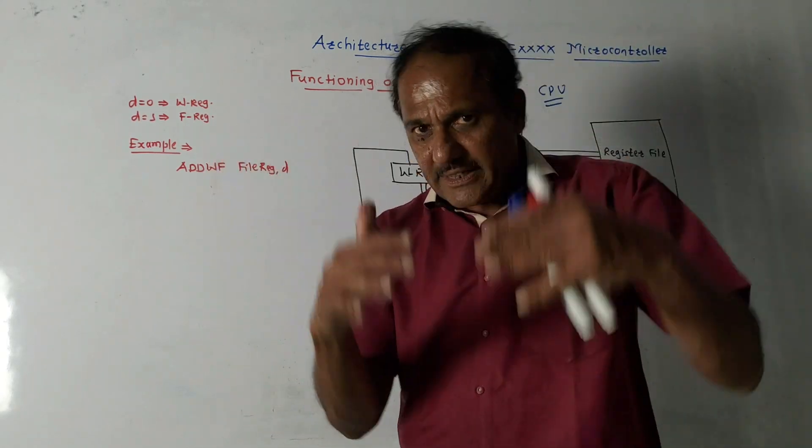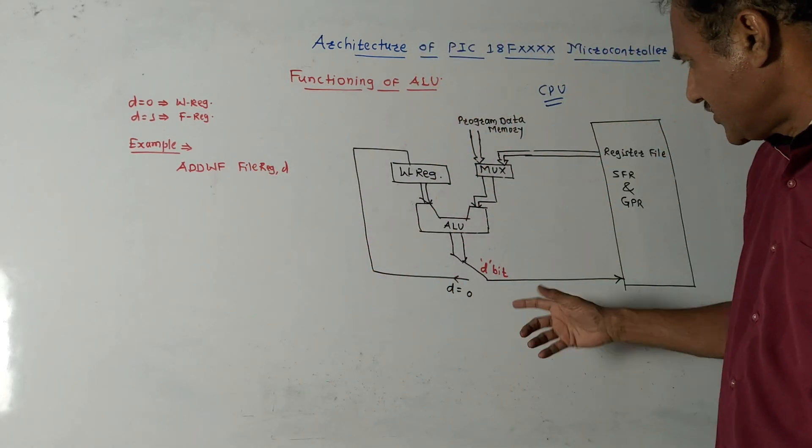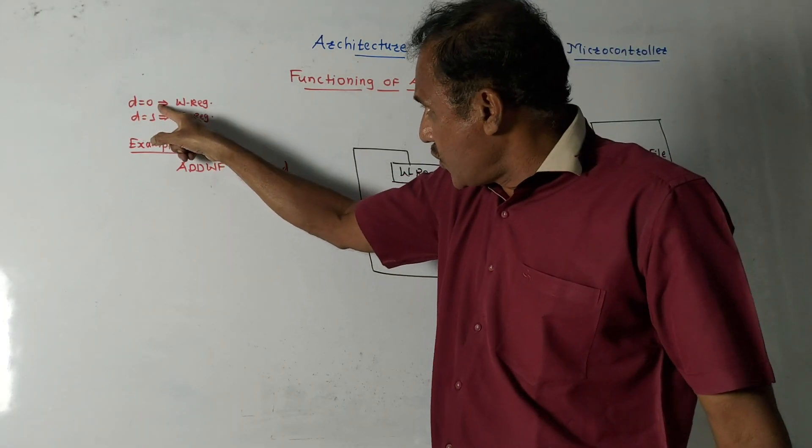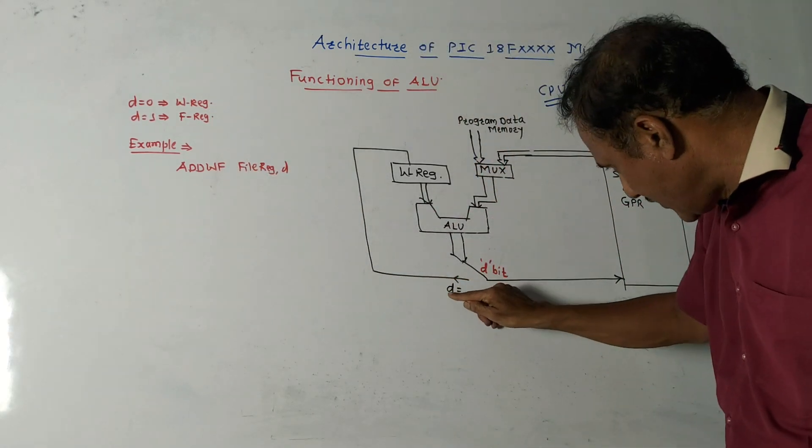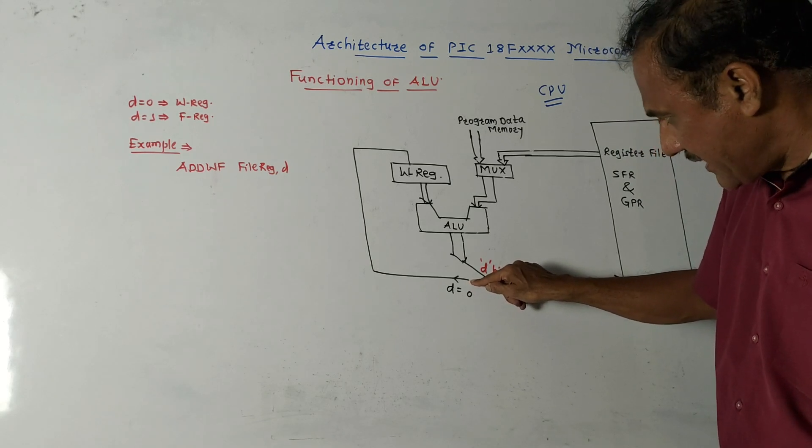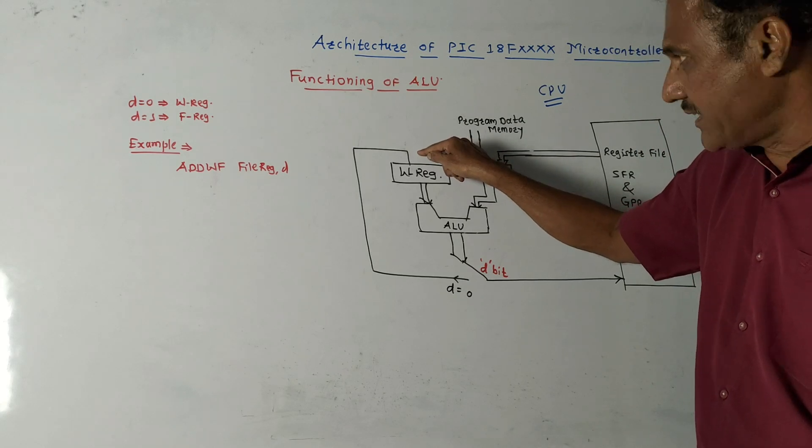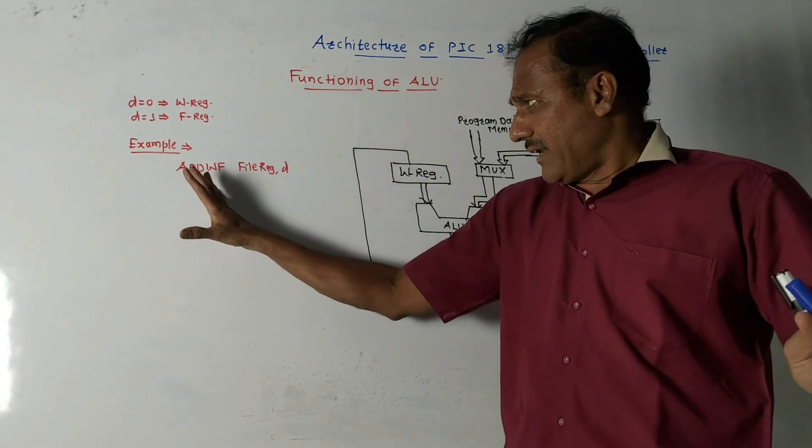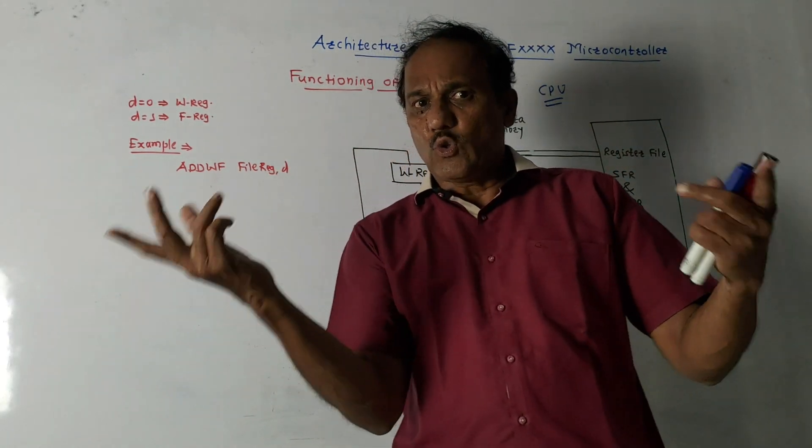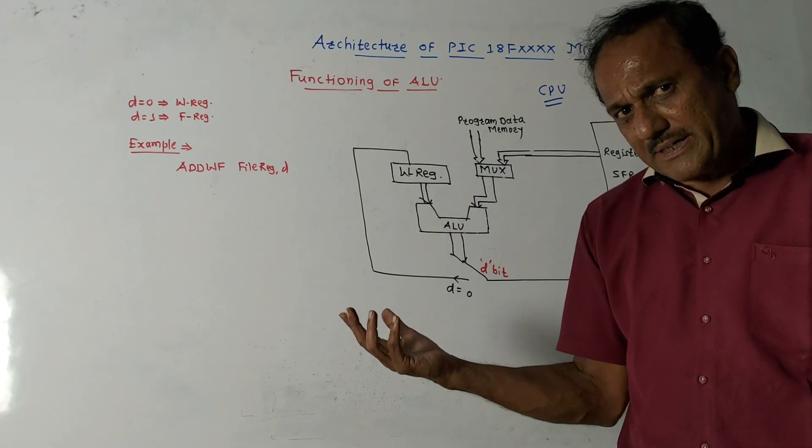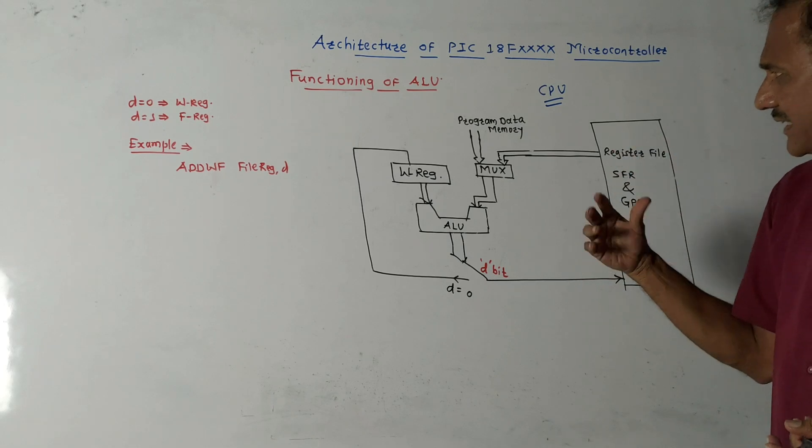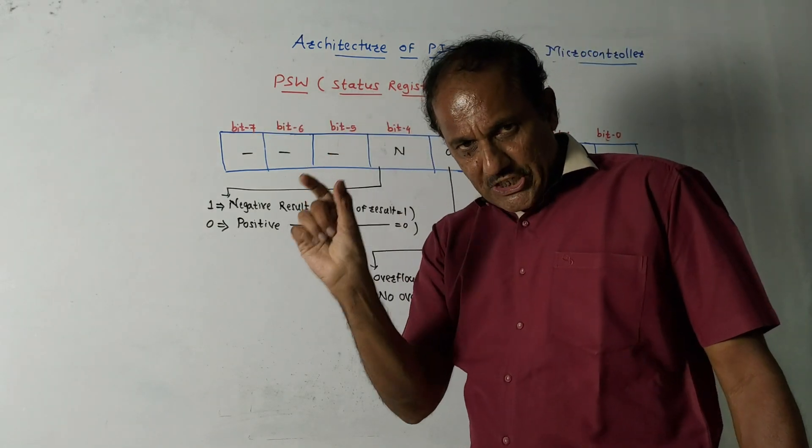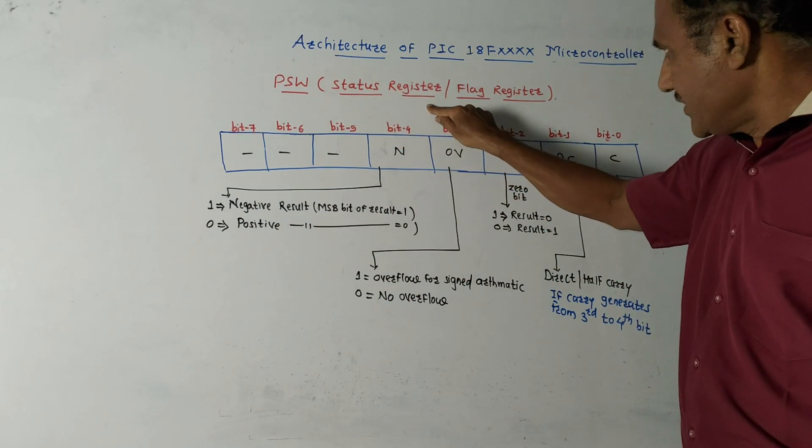After addition, one bit will be generated, that is called D bit. If value of D bit is zero, then result is stored in W register. If value of D bit is one, it is stored in F register, that is register file. If we take product of two operands, result will be 16 bits. Accumulator is capable of storing this 16 bit value.